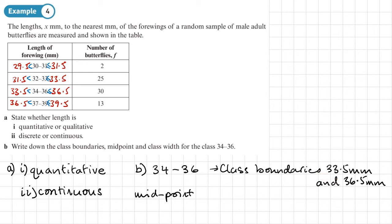It will be the same calculation. But if I'm going to do the proper calculation, it's going to be 33.5 plus 36.5 divided by two. But you'll notice if you do that calculation, you'll get the same as if you do 34 plus 36 divided by two. And that's going to be a value of 35. So 35 millimeters.